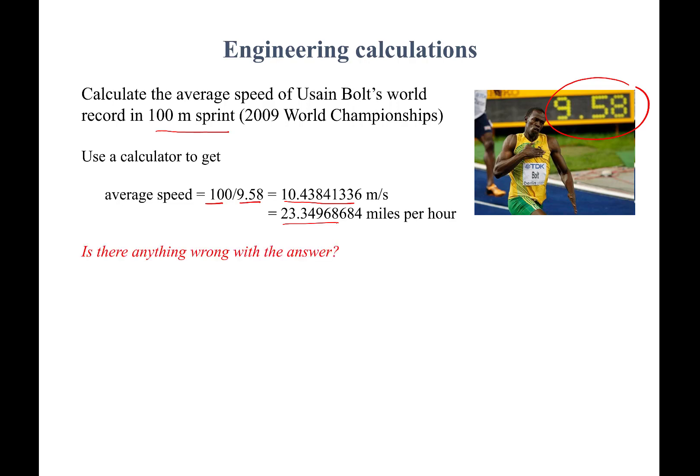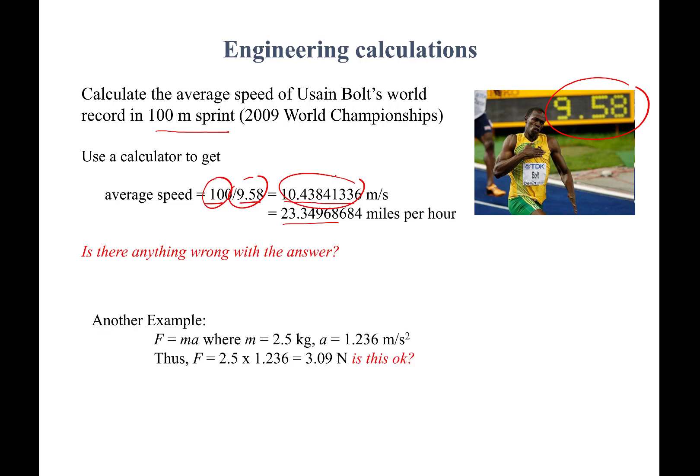Looking at this answer, you begin to question what could be wrong with it. The first thing that strikes you is that you have only three digits in both the numerator and denominator input quantities, while the final answer is reporting many more digits. Somehow it seems as if our answer is more accurate than the information provided to us. Let's find out if there is anything wrong with that.